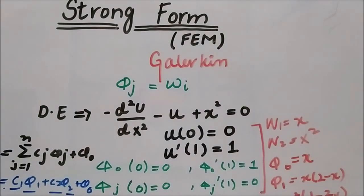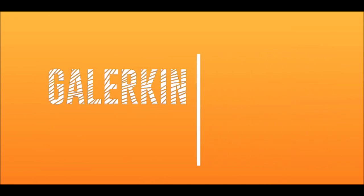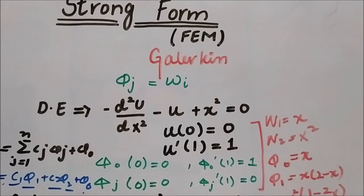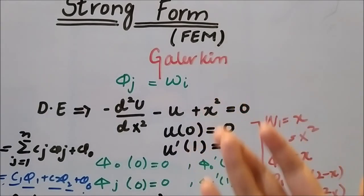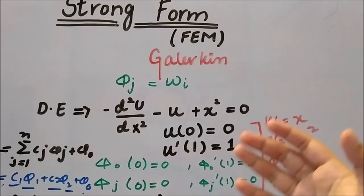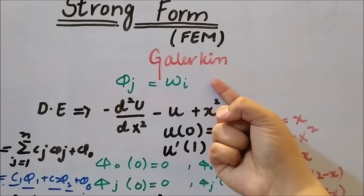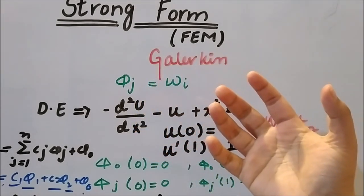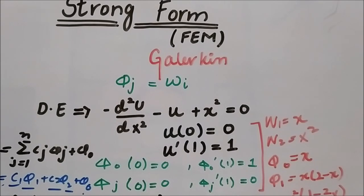Let's start with the example. In one of the previous videos we talked about the difference between the Galerkin method and the weak form or the Ritz method. The answer is that in the weak form we have to do integration by parts to weaken the differentiability, but in the Galerkin method — because this is a strong form method — there is no need to do integration by parts and no need to weaken the differentiability.